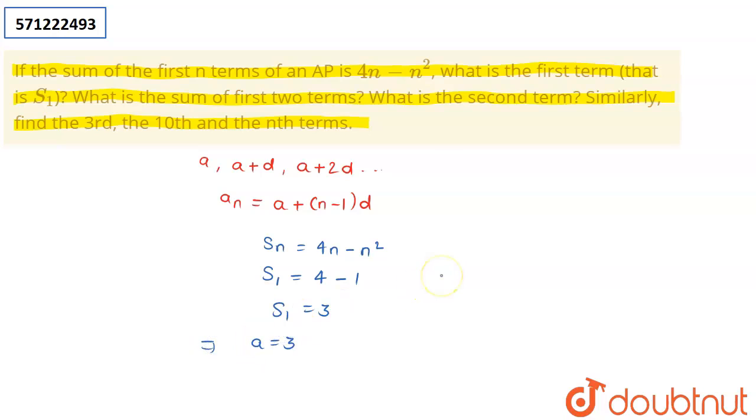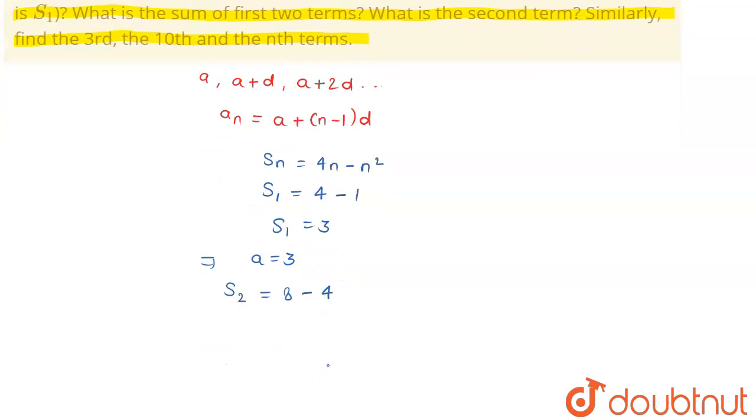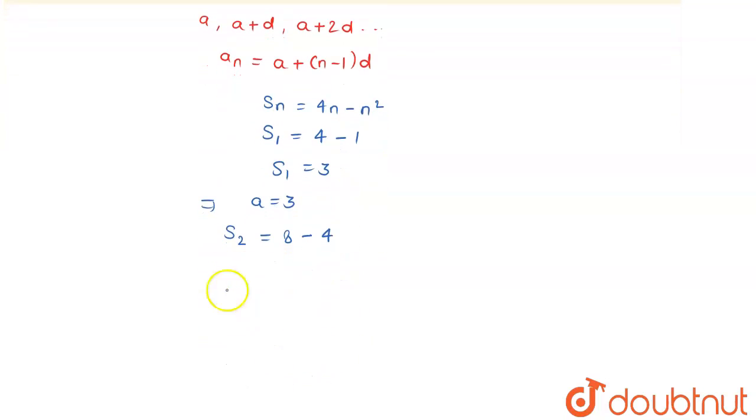Now I'm asked to find out what is the sum of first two terms. So for that purpose, let us find out S2. S2 equals 4 into n, that is 4 into 2 is 8, minus 2 squared is 4, or I can say that S2 is 4.